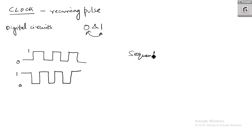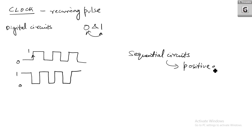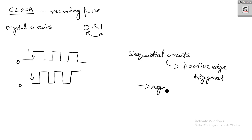Coming to the relation between clock and sequential circuits: if a sequential circuit starts at the instant when the clock is moving from 0 to 1, then such sequential circuits are known as positive edge triggered circuits. Whereas if the sequential circuits operate in the reverse direction — that means when going from 1 to 0, when the inverse clock is happening — then it is known as negative edge triggered sequential circuits.